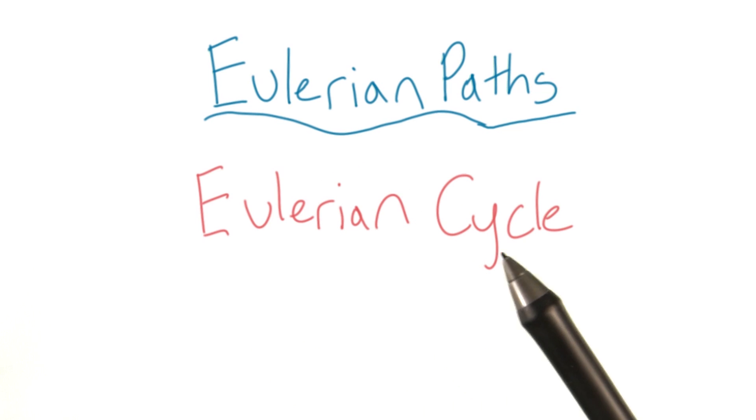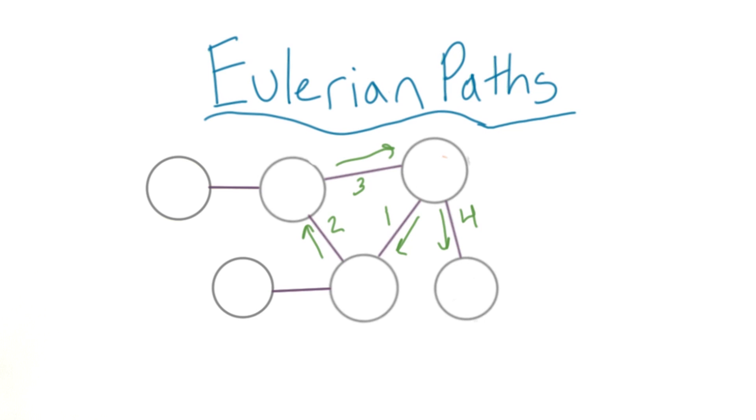In an Eulerian cycle, you must traverse every edge only once, and end up at the same node that you started with. It turns out that not every graph is capable of having an Eulerian path.